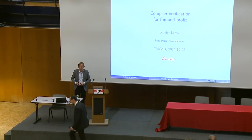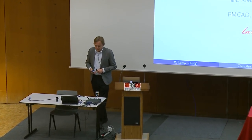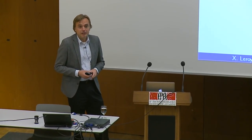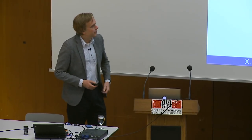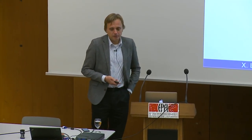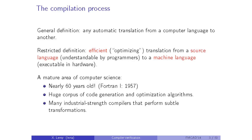Good morning everyone, it's a pleasure to be here. I'm going to talk about the formal verification of compilers and related tools. Let me start with some general discussion about compilers and how much trust you can put in them. In general, a compiler is any automatic translation from one computer language to another, and more restrictively, the efficient, so-called optimizing translation from a source language that humans can write and understand towards machine code or circuits that can be executed efficiently in hardware.